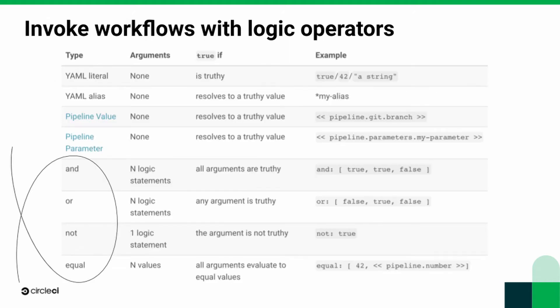So let's take a look at the logic system itself. At the top here, you can see we have a bunch of logic arguments that you can provide to logic keys, and the logic keys are surrounded in the little circle there. So what are these arguments? It's a few different things. You can use YAML literals — basically like true or false — supplying a number, a non-empty string. Also, YAML aliases can be used as well, so you can supply an alias as an argument.